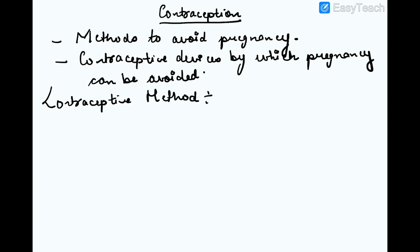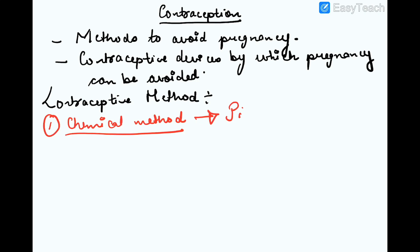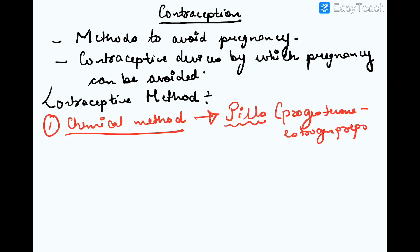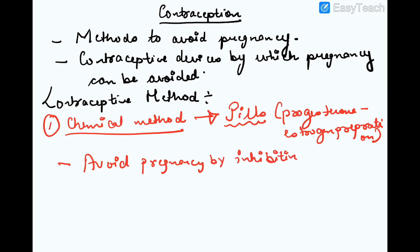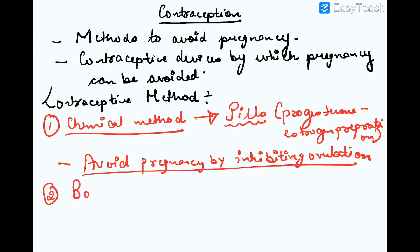The first contraceptive method is the chemical method, which includes the use of pills. These pills are progesterone and estrogen preparations. They avoid pregnancy by inhibiting ovulation — if an egg is not produced by the ovary, there is no chance of pregnancy.